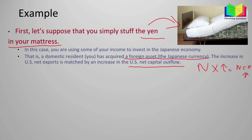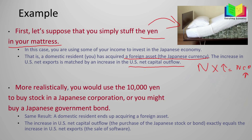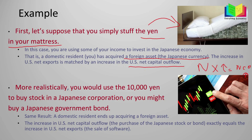The second, more realistic scenario is that you use the 10,000 yen to buy stock in a Japanese corporation or a Japanese government bond. In that case, a domestic resident still ends up acquiring a foreign asset — either a bond or a stock. The effect is the same: the increase in US net capital outflow from purchasing the Japanese stock or bond exactly equals the increase in US net exports from the sale of the software.